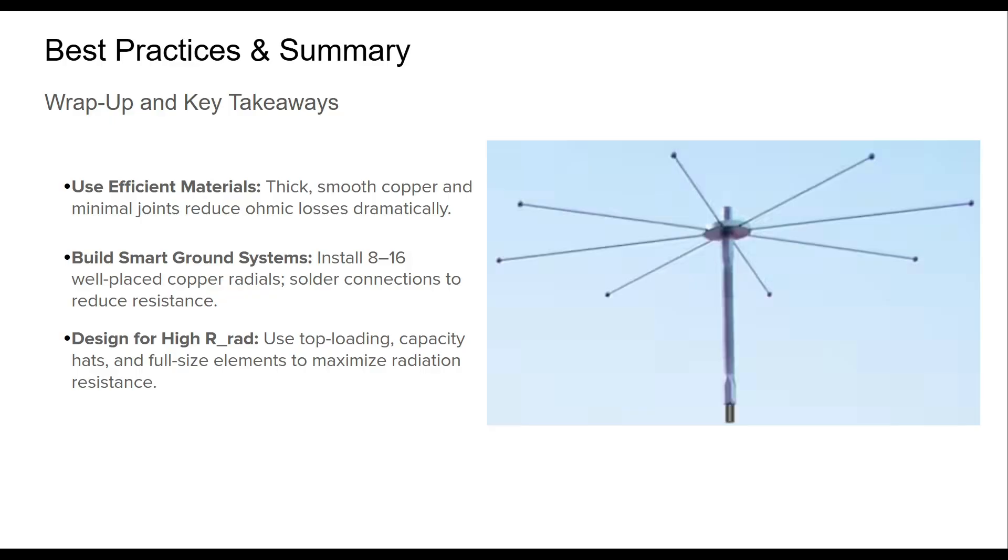Improving antenna efficiency is a multidimensional process, but it all boils down to three critical areas. First, conductor quality: thick, smooth, corrosion-resistant wires provide a larger surface area for RF current, minimizing heat losses. Second, ground systems matter a lot. Installing even 8 to 12 copper radials and making sure all joints are soldered slashes the resistance in the return path. Poor soil can still be mitigated by a well-constructed radial network. Finally, design choices that boost radiation resistance, like full-size elements and top-loading, can make or break system efficiency. By combining all these strategies, you'll ensure your antenna system puts more power into the air and less into heating the earth.